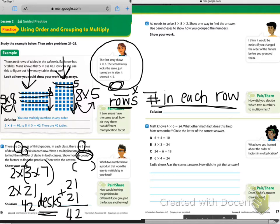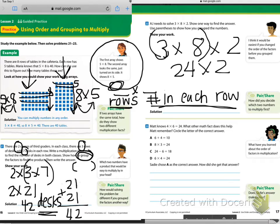Now we're on page 17. We're going through this pretty quickly, aren't we? AJ needs to solve three times eight times two. Show one way to find the answer. Use parentheses to show how you grouped the numbers. We're going to do three times eight times two. I might do three times eight first. I know that three times eight is 24 times two. So what you're going to do now is you're going to do 24 times two. Find the answer and make sure you label. Actually, you don't have to label this one because AJ is just solving this.